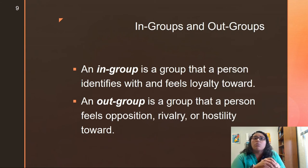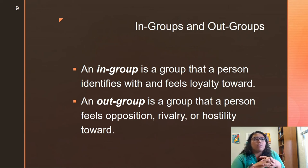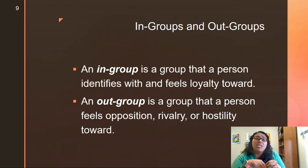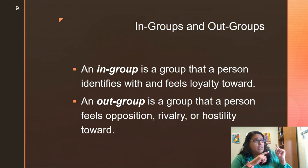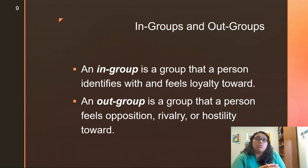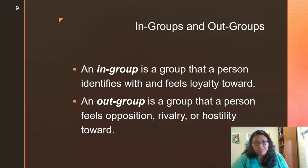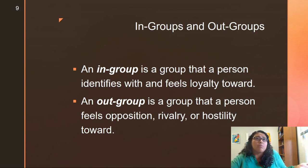In-groups and out-groups: an in-group is a group that a person identifies with and feels loyalty towards. An out-group is a group that a person feels opposition, rivalry, or hostility toward. What happens is that because you're trying to create a strong bond within your group, you start 'othering' other groups — now they're rivals, your enemy. Think of something like Mean Girls: you're creating an in-group within your clique, and by default everyone else becomes an out-group, the problem, the enemy.